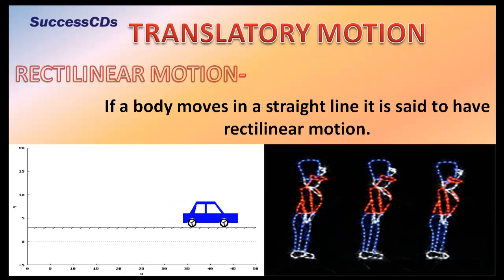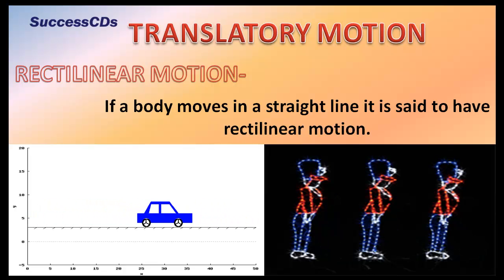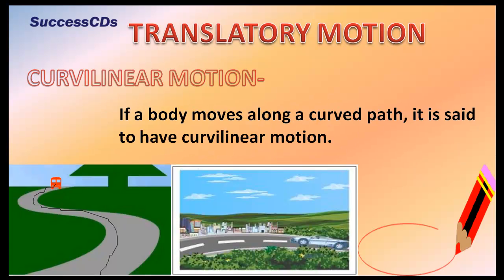Translatory motion is of two types. If a body moves in a straight line, it is said to have rectilinear motion — for example, a car moving on a straight road or soldiers marching. If a body moves along a curved path, it is said to have curvilinear motion — for example, a car taking a turn on a curved road.